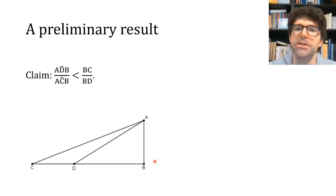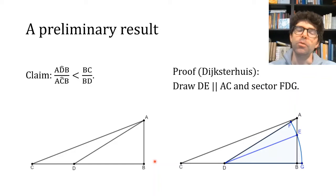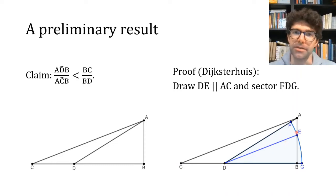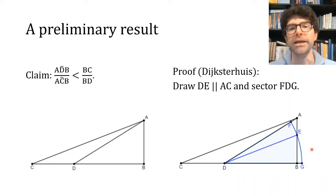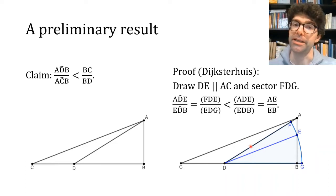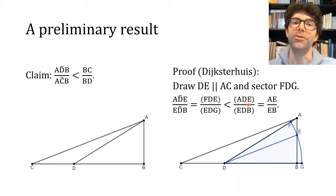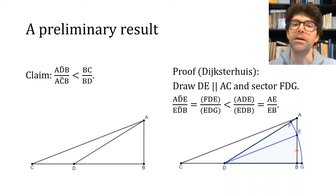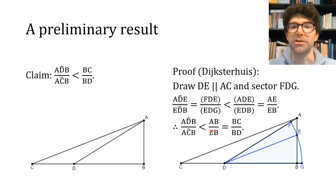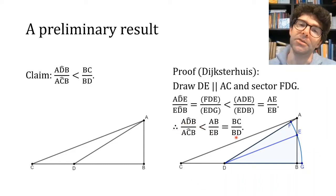The proof is borrowed from Dijksterhuis's wonderful book on Archimedes. We draw the line through D parallel to AC, and a circle sector centered at D that goes through E, between lines AD and BD extended. The two angles at D are proportional to their sectors, but the upper sector is smaller than triangle ADE while the lower sector is larger than its triangle. So the ratio of angles is less than the ratio of the areas of these triangles, which equals the ratio of base segments AE and EB. Adding one to each side gives the result, since triangles ABC and EBD are similar due to their parallel sides.